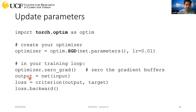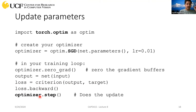The full training step is: reset gradients, get the output from the forward pass, compute the loss using the criterion, call loss.backward() to compute gradients for every parameter, then call optimizer.step() to update the network weights. For SGD, all you need are the gradients already computed by backward().